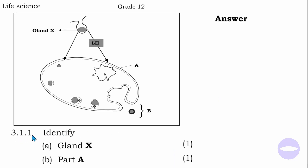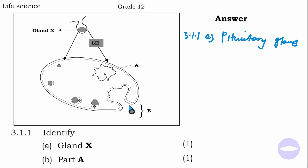Question 3.1.1 says identify gland X. Gland X is the pituitary gland. Question 3.1.1 part B says identify part A. Part A is corpus luteum.